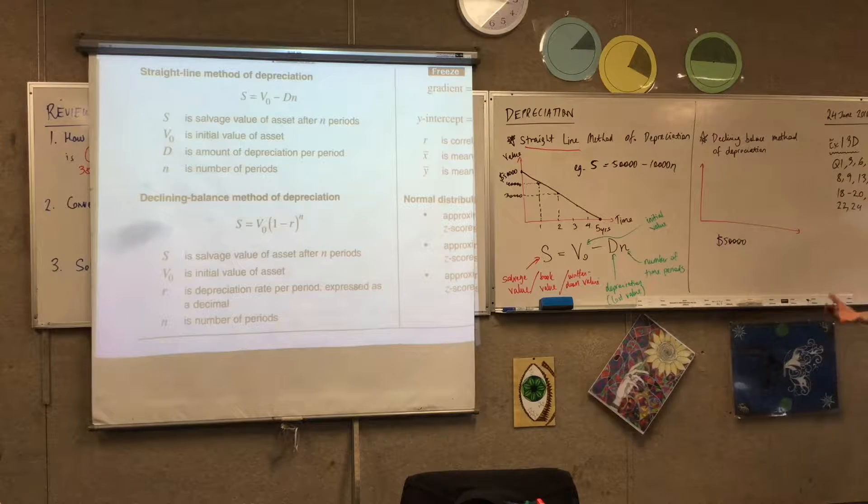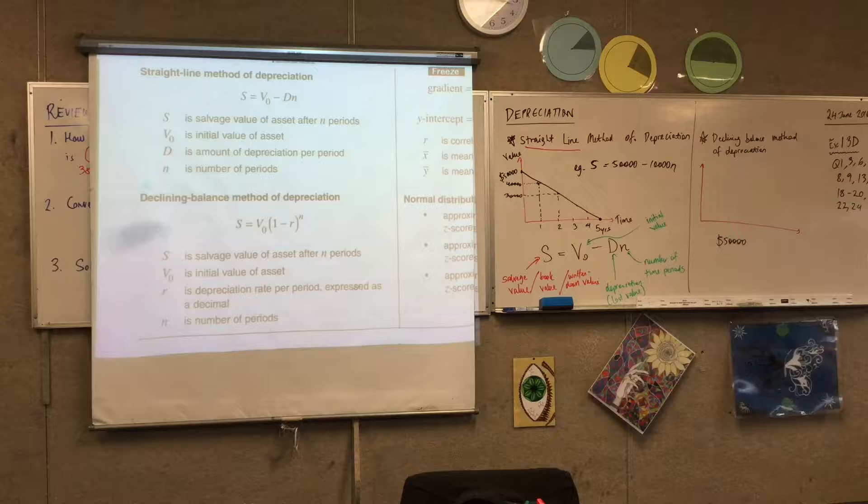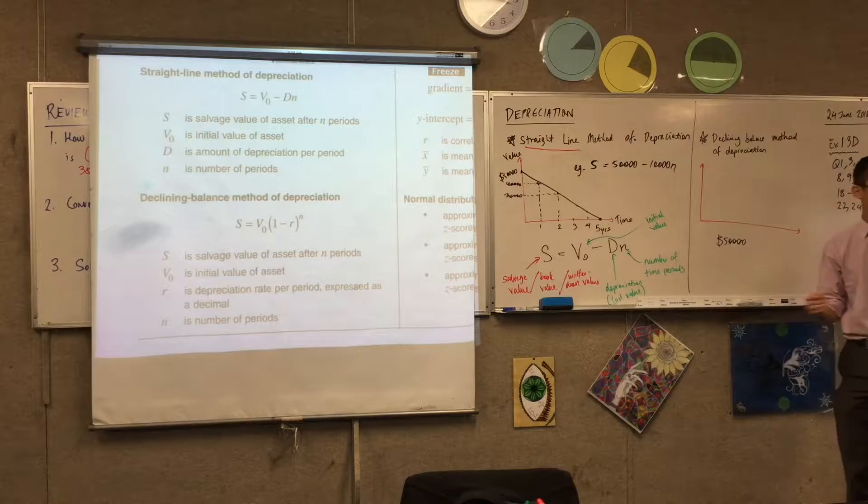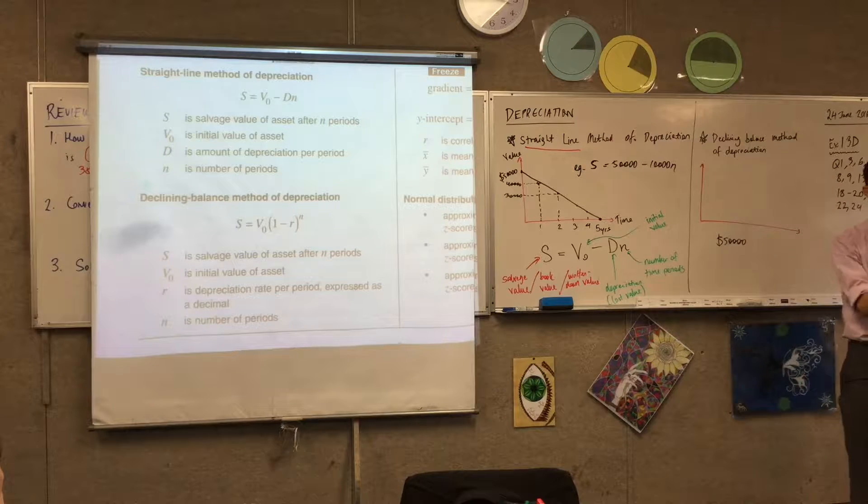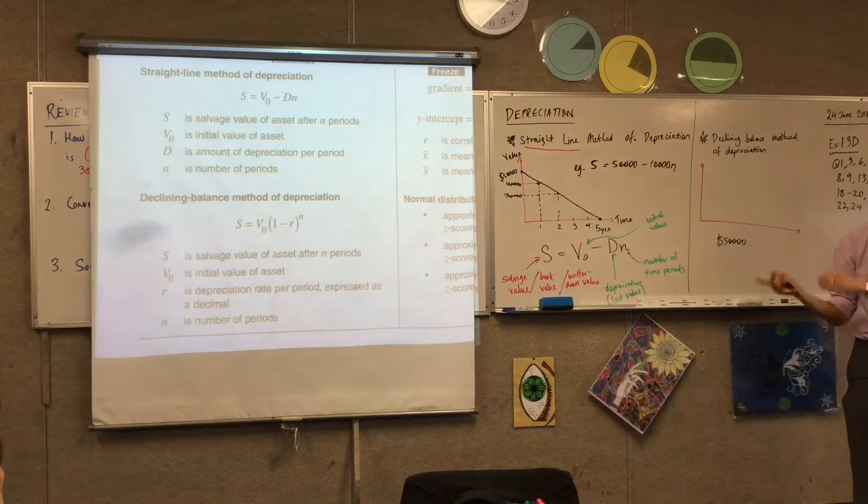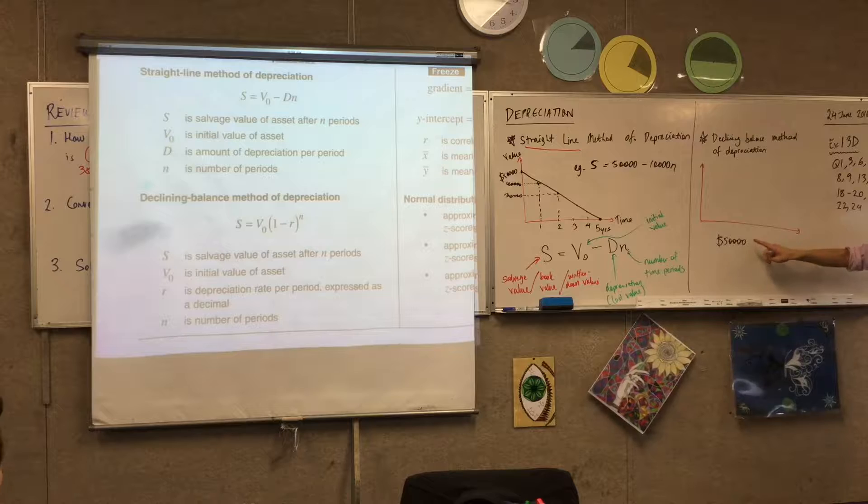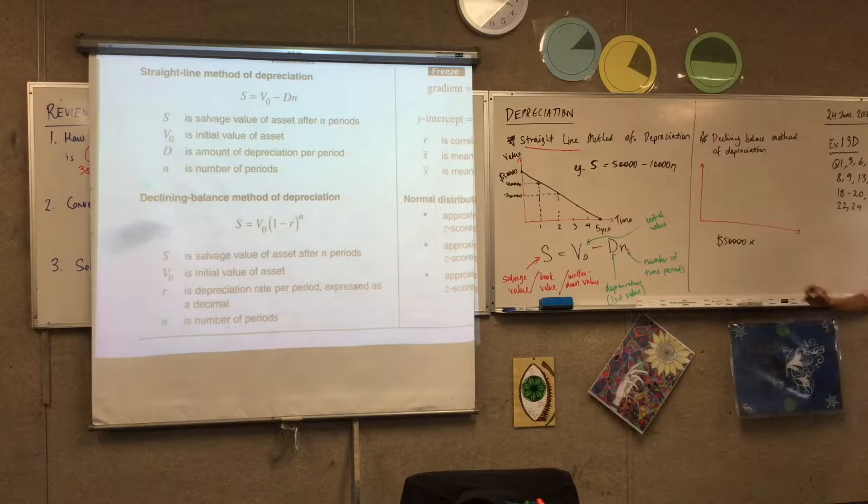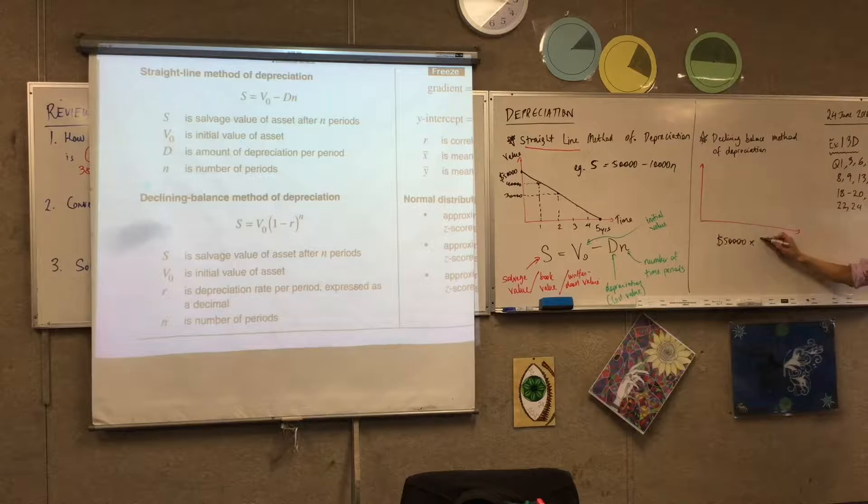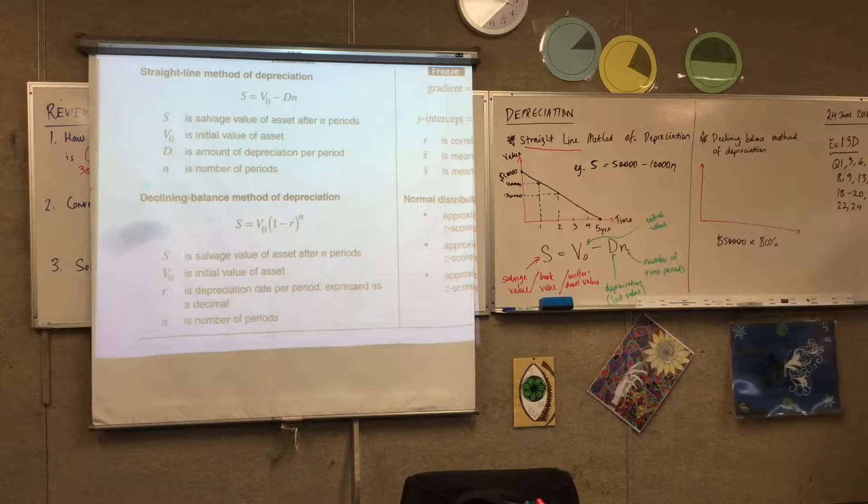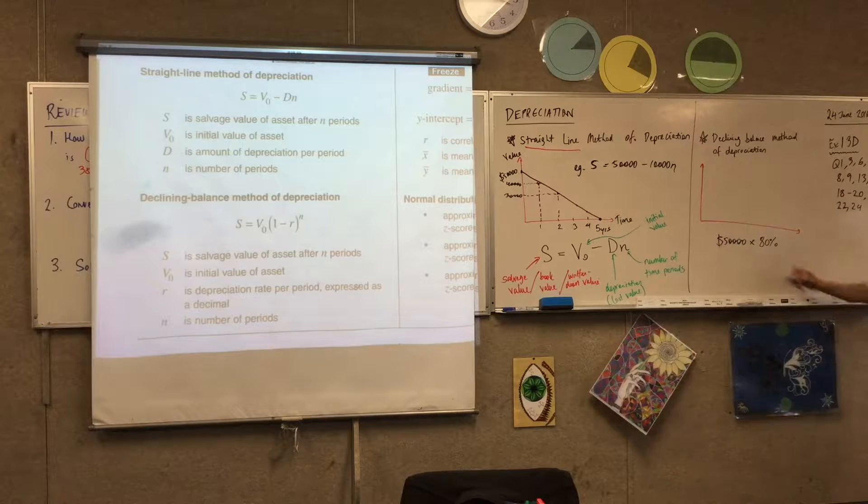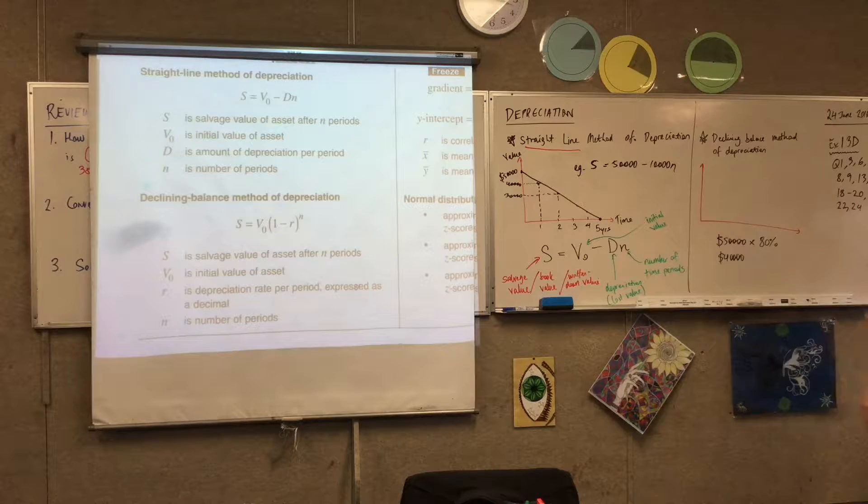The first year you lose that $10,000. What is $10,000 as a percentage of this initial value? 20%. Very good. So $10,000 is a fifth of this amount. So 20% is like saying what this becomes the next year is 80% of its original value. The year has passed, it's now 80%. So now it's $40,000.